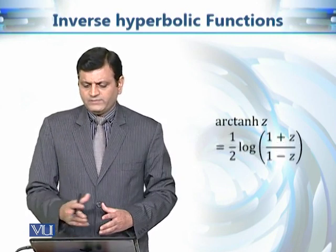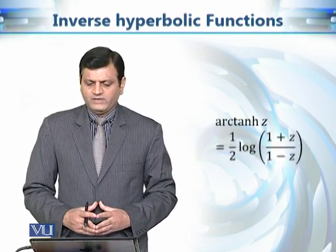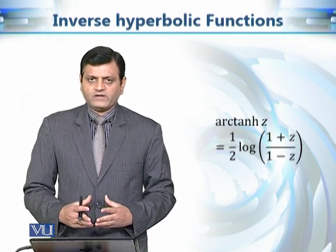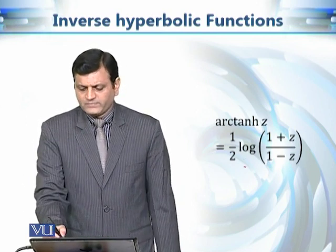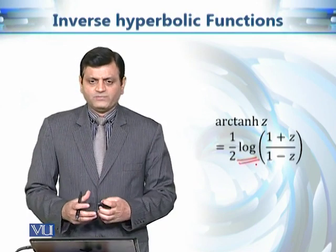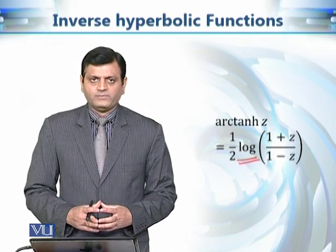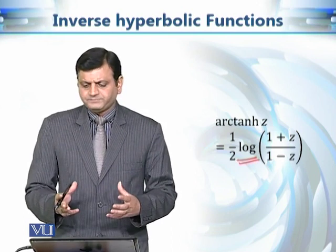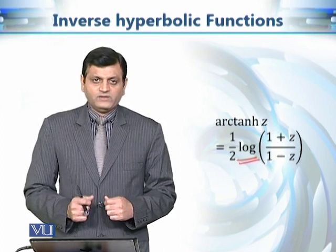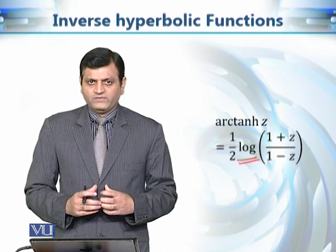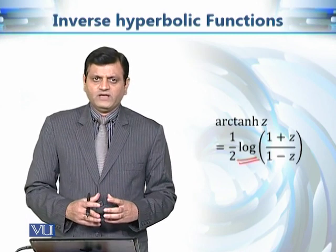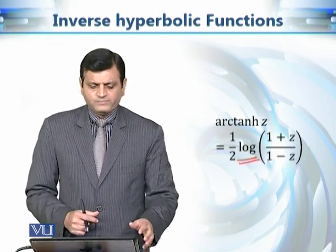Arc cosine hyperbolic z is a multivalued function due to two reasons: the logarithm is involved and the square root is involved. Similarly, arc tangent hyperbolic z is equal to one-half log of (1 plus z) divided by (1 minus z). There is only one multivalued function involved in the definition of arc tangent hyperbolic z, so it is multivalued, and the branch calculations are relatively simple.